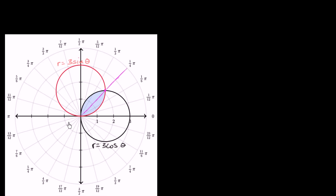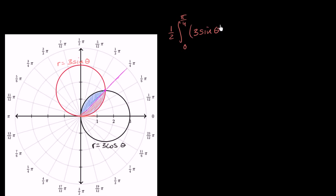The key is to realize that for theta between zero and pi over four, we're bounded by the red circle — r is equal to three sine theta. So this first area is going to be one half times the definite integral from zero to pi over four of three sine theta squared d theta. That's the orange region.